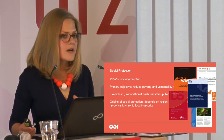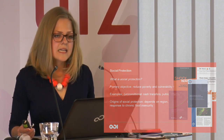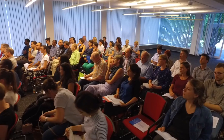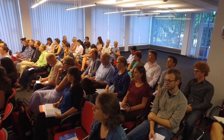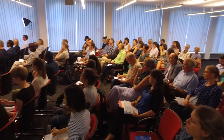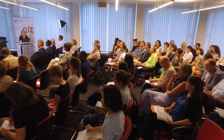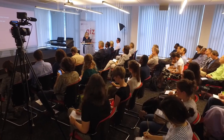Social protection programmes take a range of different forms and functions. By form I mean the way to deliver the assistance. The most common one people know are cash transfers — basically delivering cash to people. We also have public works programmes, which are cash for work, where people get cash in exchange for labour, usually to build community assets, and in exchange get short-term employment.